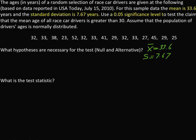Significance level which is alpha equals 0.05. Claim that the mean age of all race car drivers is greater than 30. Assume that the population of drivers' ages is normally distributed. Then we should know the sample size, which is N equal to 15.